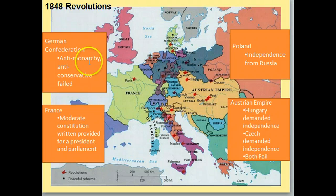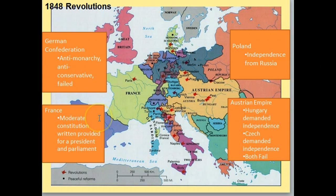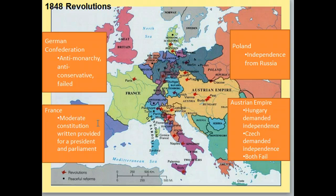The German Confederation has a revolution — you can see the big multicolored area here in the middle, led by Prussia. It was an anti-monarchy and anti-conservative revolution, and it was an ultimate failure. France ends up having a revolution as well — this 1848 revolution is a similar idea to the Les Mis revolution. They actually end up being somewhat successful: they write a moderate constitution which provides for a president and a parliament, so they're returning to a republic rather than a monarchy.